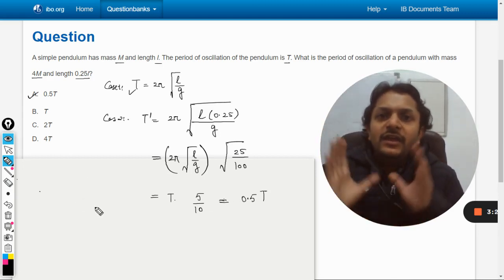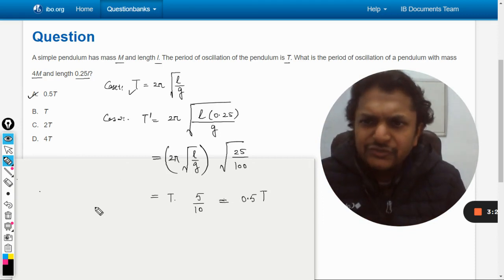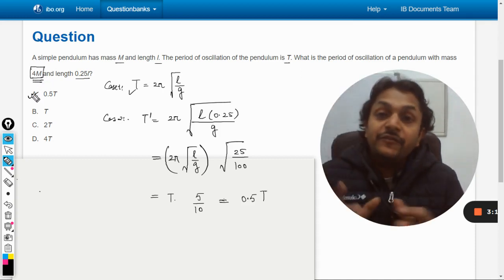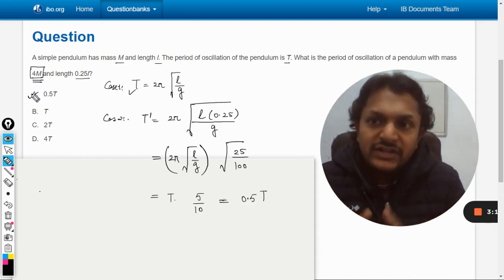So the answer should be A, 0.5 capital T. So it was fairly simple and there was no confusion, only one confusion was why this data is given. Will there be any changes that will take place here